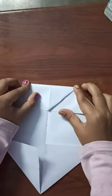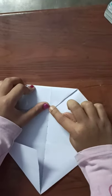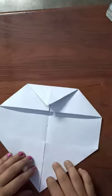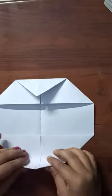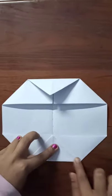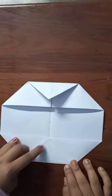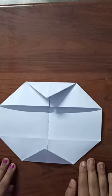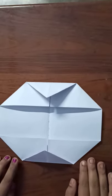We have to do this thing both sides. Now you can see the paper is looking like this. Now what do we have to do?